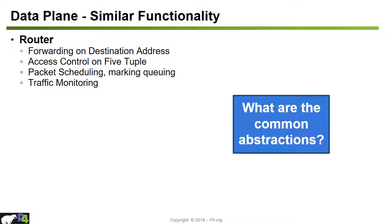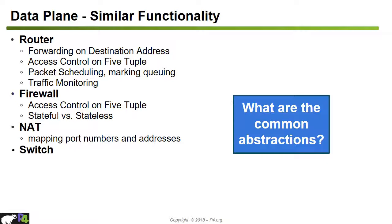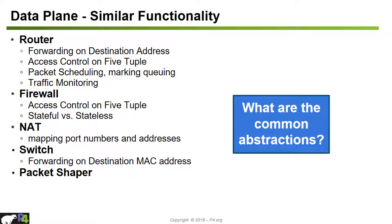A firewall performs access control based on five-tuples with stateful and stateless modes. A NAT maps port numbers and addresses, rewriting IP addresses and port numbers. A switch forwards on destination MAC address, uses MAC address tables to determine the output port, and uses a local learning algorithm to build the switch table. A packet shaper classifies packets and shapes traffic accordingly.